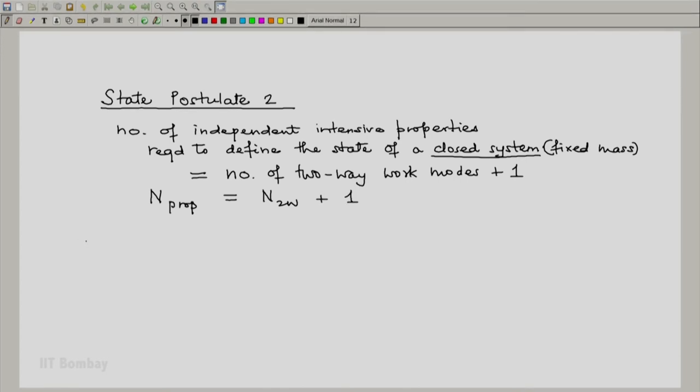Now let us look at the consequence of this. Let us say that we tabulate number of two-way work modes. If we have a simple system, the number of two-way work modes would be 1. If it is greater than or equal to 2, we have a complex system. Whereas if it is 0, then we have a rudimentary system.